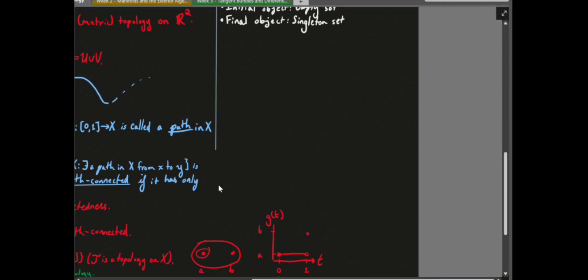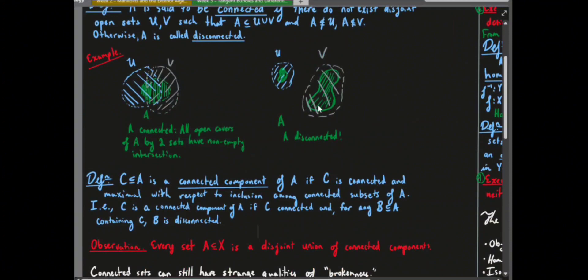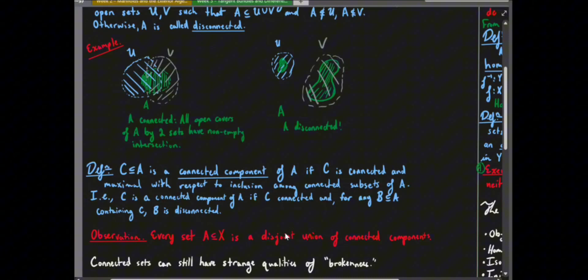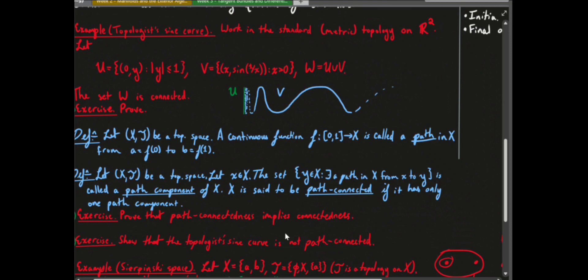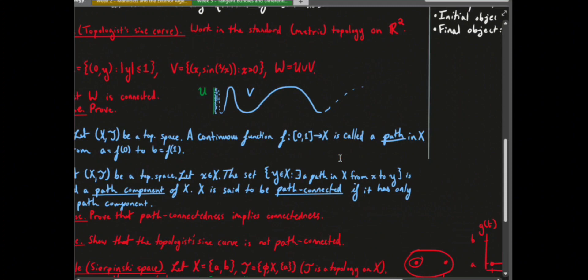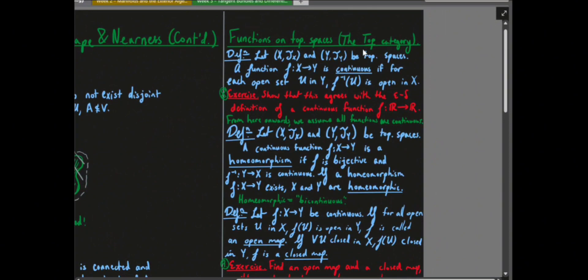We're going to look at a trick for checking if things are connected. It's easy to check disconnectedness by constructing two disjoint open sets. The other direction requires a contradiction proof. A trick is to show that the space is path-connected, which implies it is connected. To define paths, we need a notion of continuity first.